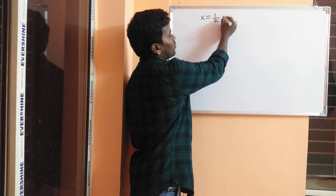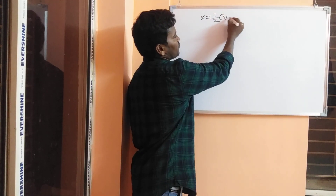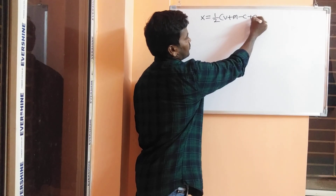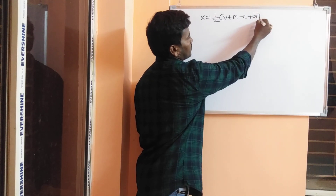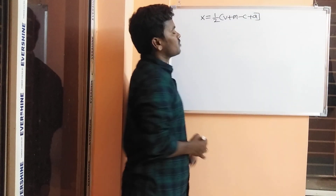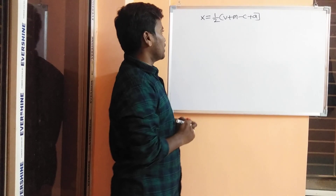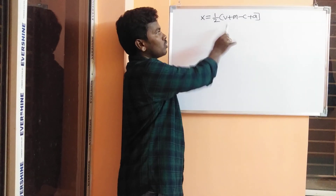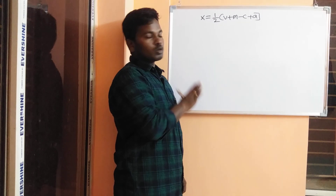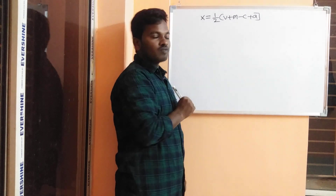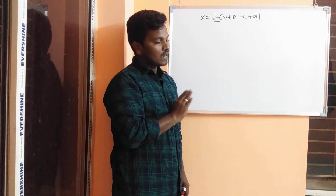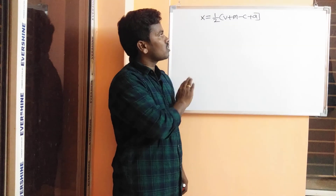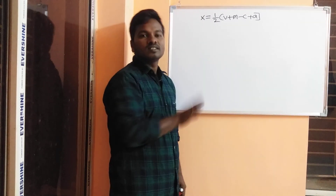Here is the formula: one by two of (V + M - C + A). This is the shortcut formula to find out the hybridization. To apply this formula, first of all you need to know the electronic configuration.